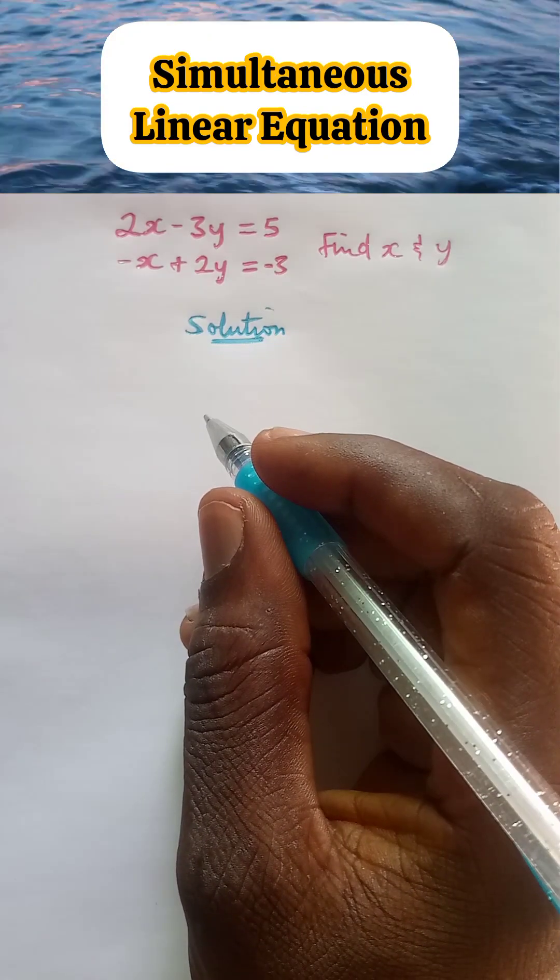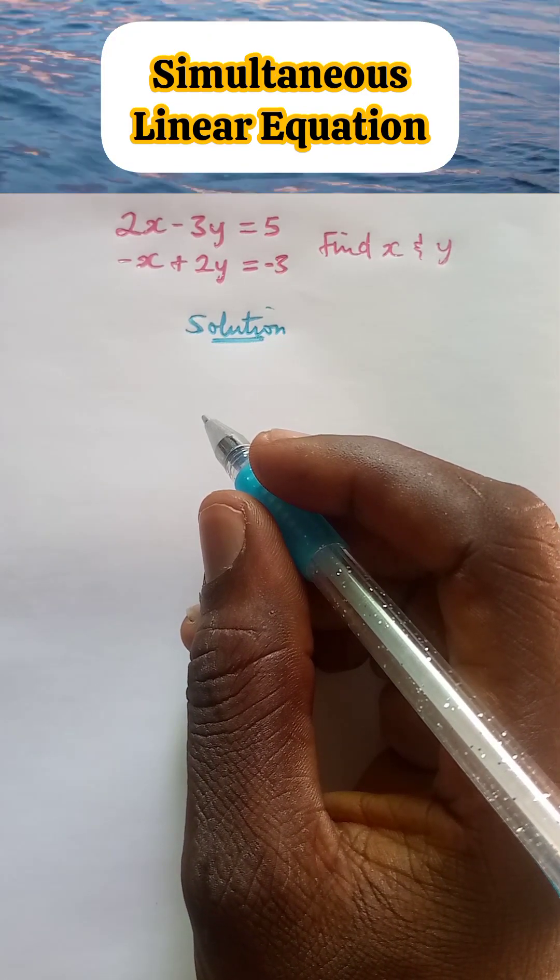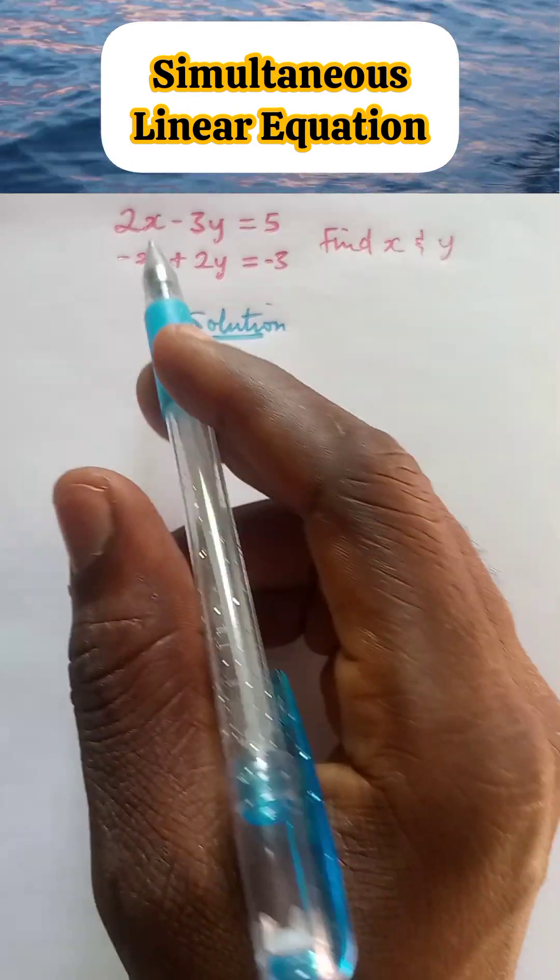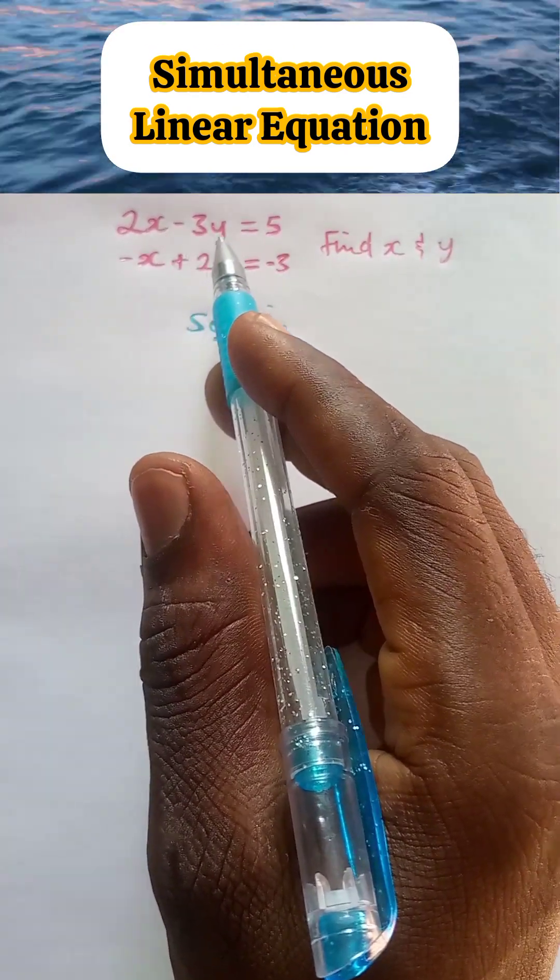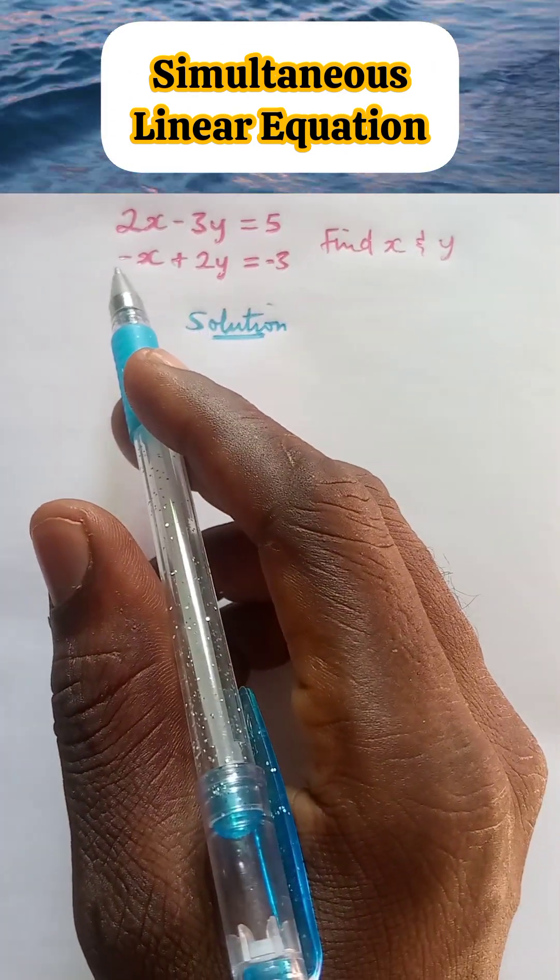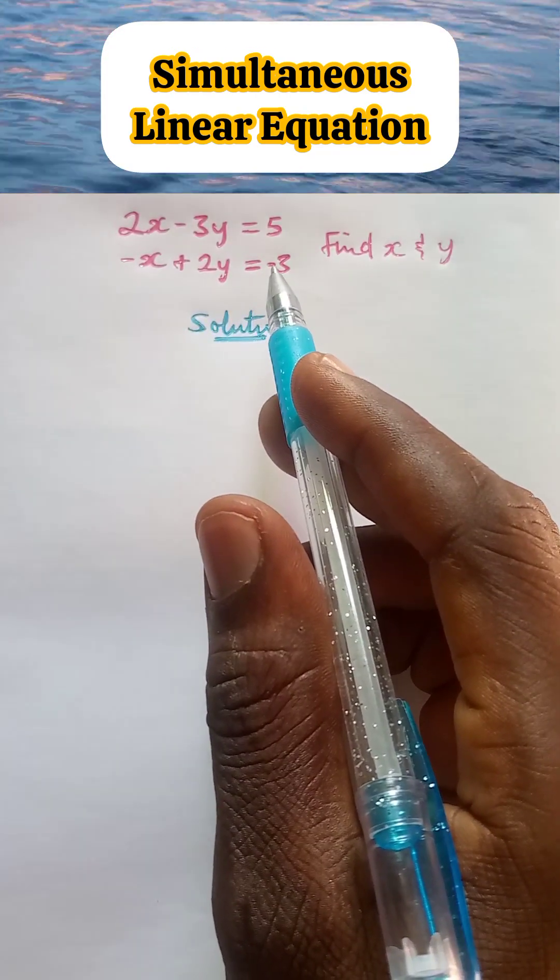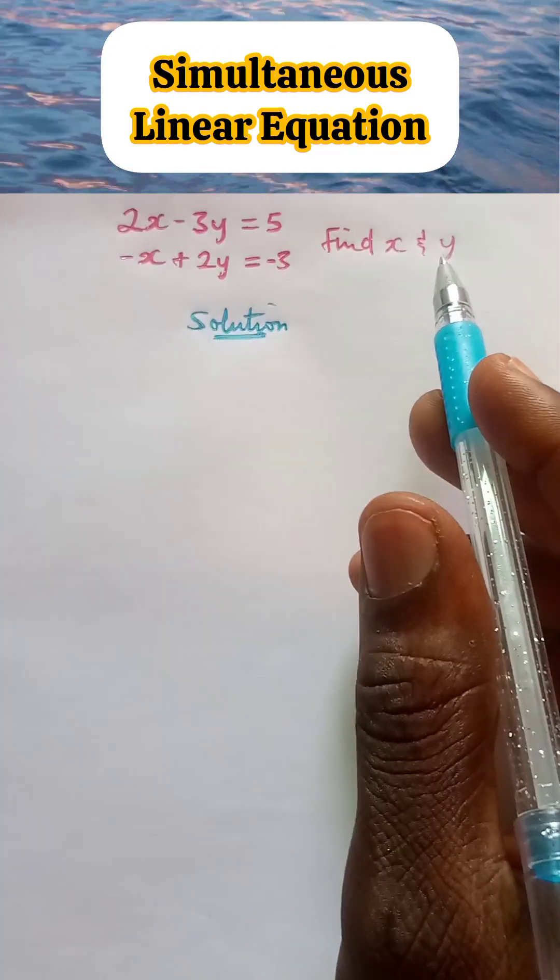We have a simple question here on simultaneous linear equation. We have that 2x minus 3y equal to 5, minus x plus 2y equal to minus 3. Find x and y.